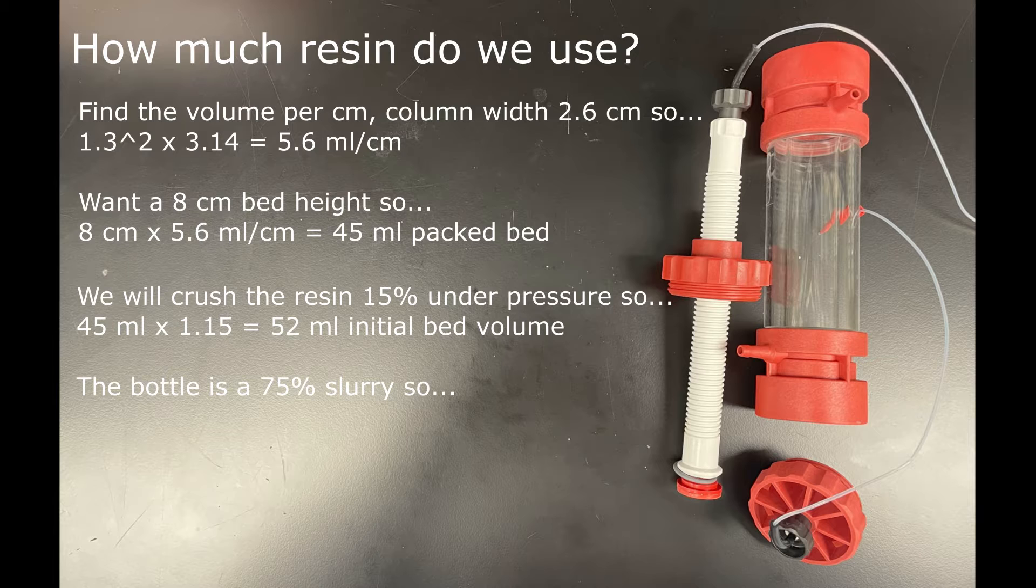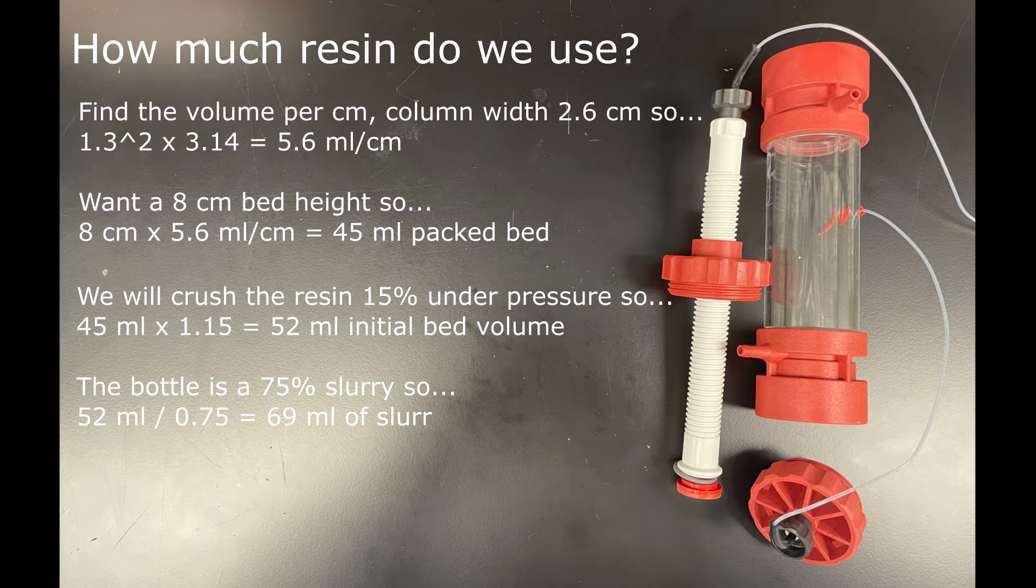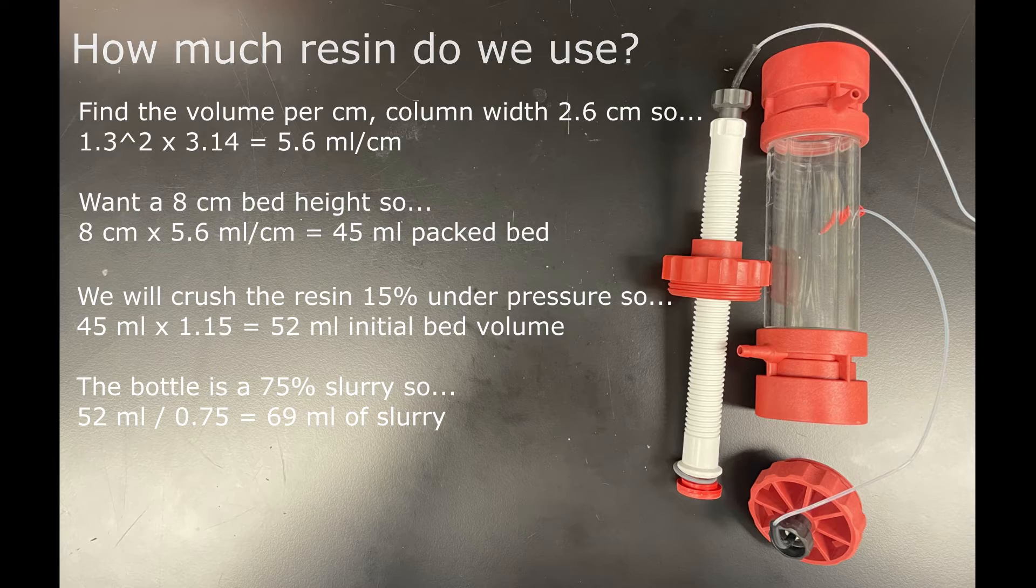Finally, we measured a slurry content of 75%, so we're going to divide 52 mils by 0.75 to get 69 mils of slurry that we need to measure out.